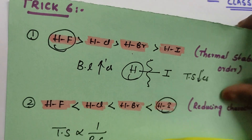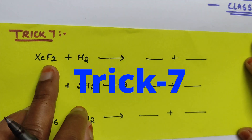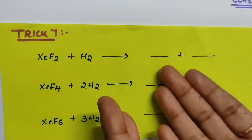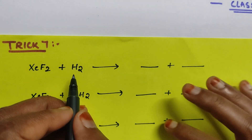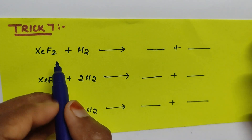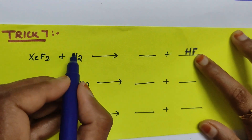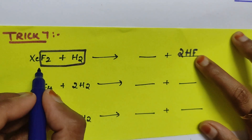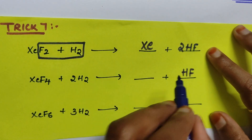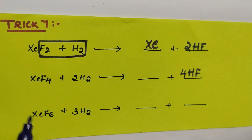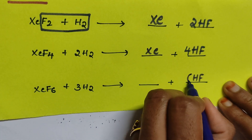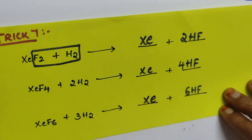Coming to trick number seven: XeF2 reactions with hydrogen. This is very easy — they give the reactants and ask for byproducts. What you need to do is see how many hydrogens and fluorines are present, then remove them as HF. For example, with XeF2 and H2: you can remove 2 HF, so keep 2 HF here; the remainder is Xe. For XeF4: 4 HF. For XeF6: 6 HF, and xenon is your product.